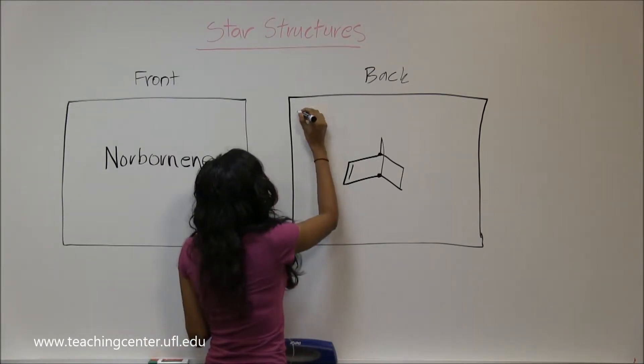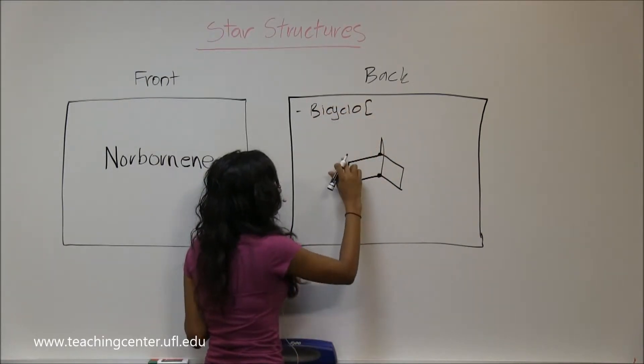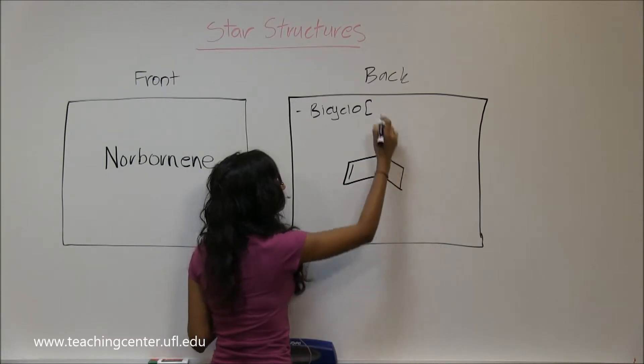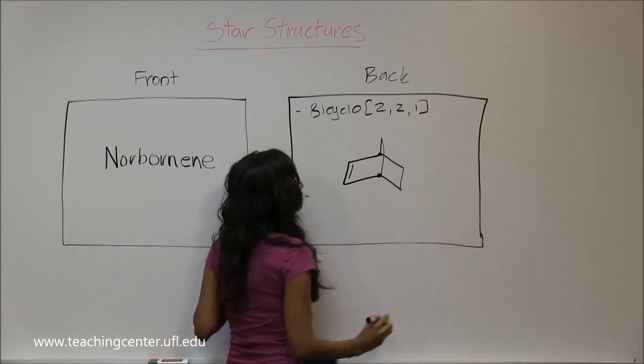So how would you name this? You have bicyclo, then we have one, two, one, two, so that's two and two. And you have one on top, that's one.